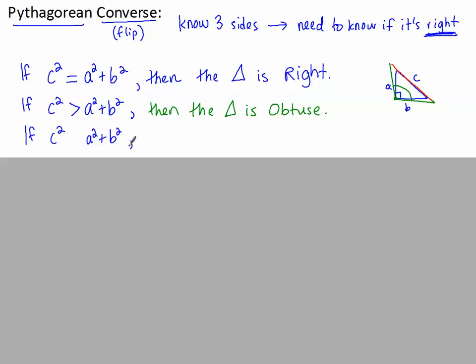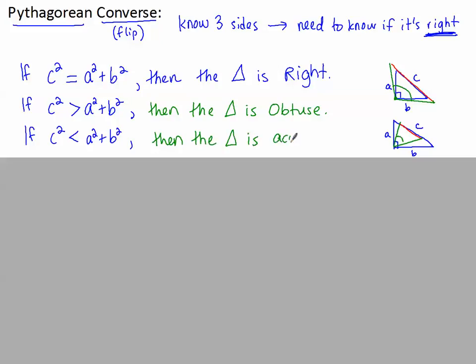Let's think of it the other way. If c² is less than a² + b², now I'm going to make c shorter so c² can be smaller. Look what happens when I connect with the other sides — there's a, there's b, and this angle is smaller. So if c² is less, think smaller angle, and the triangle is acute.